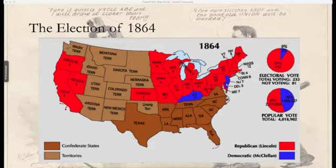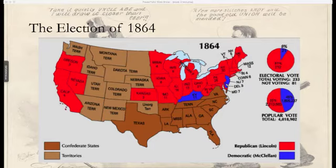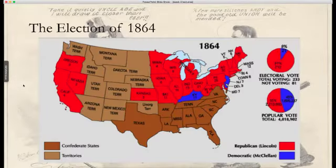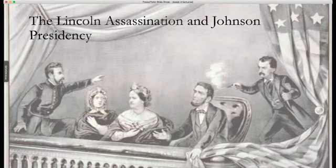Lincoln and Johnson won the election pretty strongly, as you can see from the electoral map. They obliterated McClellan in the Electoral College and won 55% of the popular vote, with McClellan winning 45%. McClellan won New Jersey and Kentucky, while Lincoln took every other voting state that was not in the Confederacy.